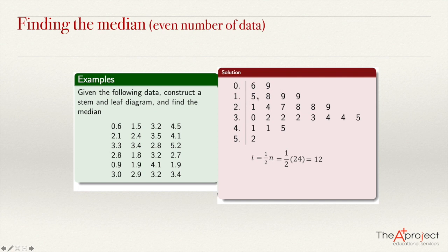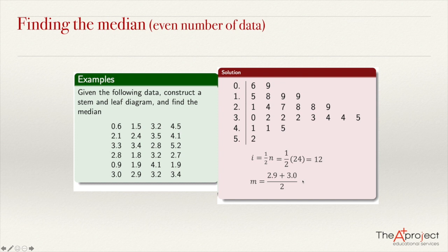Because I equals 12, a whole number, we get the average of the data in position 12 and position 13. Counting to find position 12: 1, 2, 3, 4, 5, 6, 7, 8, 9, 10, 11, 12 — this data is 2.9. The next data is 3.0. So the median will be the average of 2.9 and 3.0: (2.9 + 3.0) / 2 = 2.95.